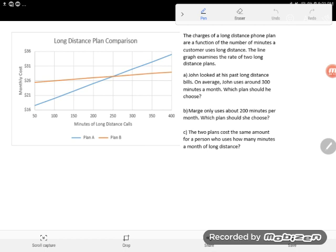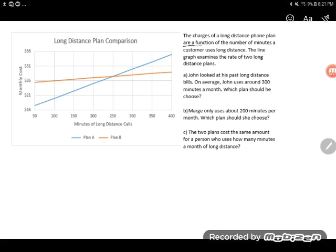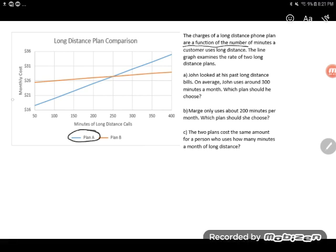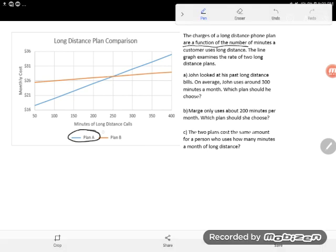I see the charges of a long-distance phone plan are a function of the number of minutes a customer uses long distance. In this case, when I say a function, it's kind of like saying depends on. So the charges of a long-distance phone plan, how much you get charged, depend on how many minutes you use. So the more minutes you use, the more you get charged here. The line graph examines the rates of two long-distance plans. We can see that this blue line here is Plan A, and this is the key here telling me. And the orange line here represents this Plan B.